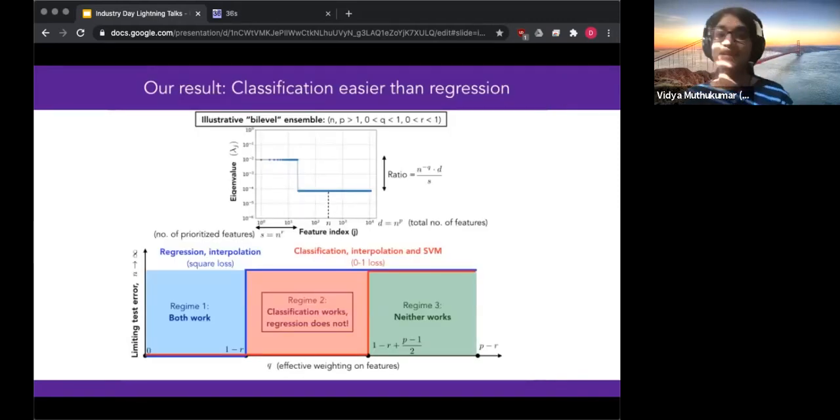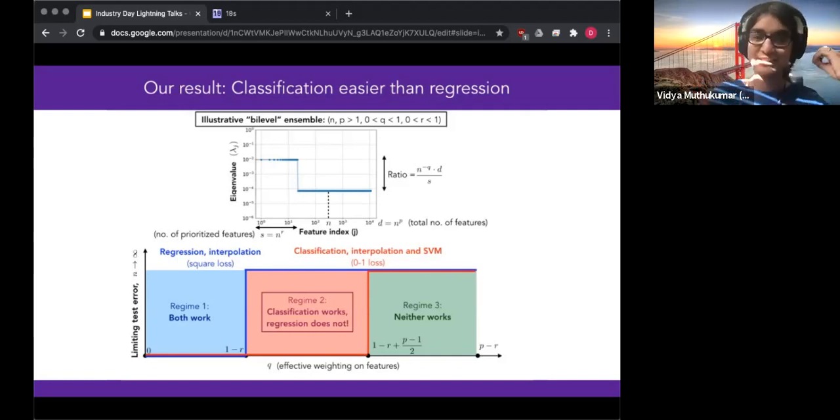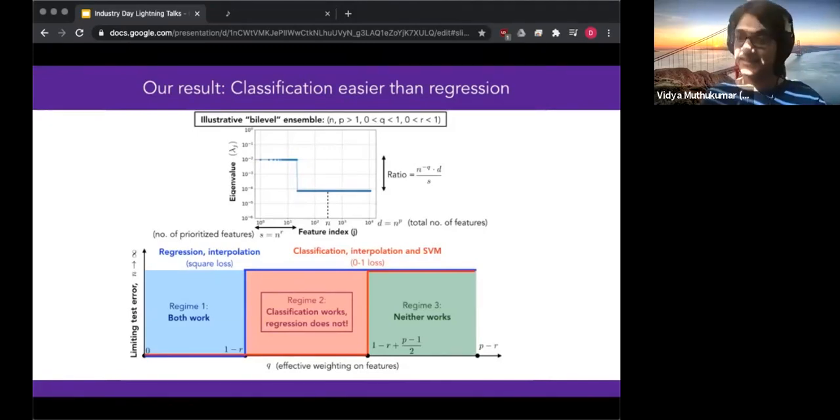So our main result was to analyze the classification error, both for interpolation and SVM solutions, and show that this is actually a much easier problem than regression. In other words, there exist high-dimensional regimes in this problem for which classification generalizes well, but regression does not. So I don't really have time to go into the details of all of these parameterizations. But the main broad takeaway is that the properties of the covariance matrix really matter for this problem. There needs to be some effective prioritization of some low-dimensional features. And the sense in which we have a separating regime is that for some particular parameterizations of this model, we can show that the limiting test error for regression does not go to zero. So it stays up at something like one, but the classification error actually goes to zero.